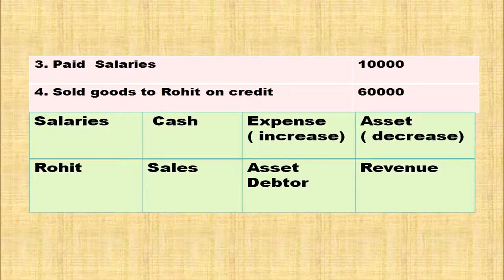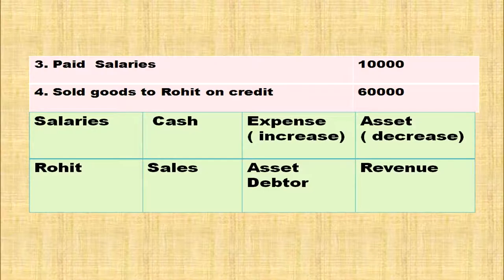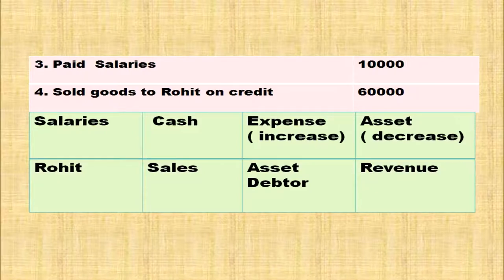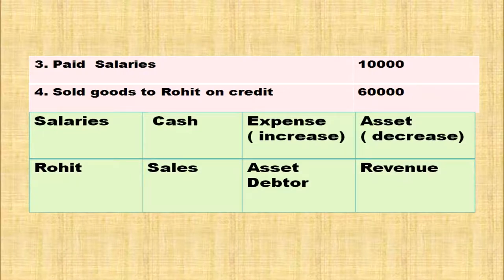Paid salaries Rs. 10,000. Affected accounts: salary account and cash account. Salary account falls under expense — when increased, it is debited. So, salary account is debited. Cash falls under asset account. Cash is going from the business, so cash is decreasing — when asset is decreasing, it is credited. Salary account debited and cash credited.